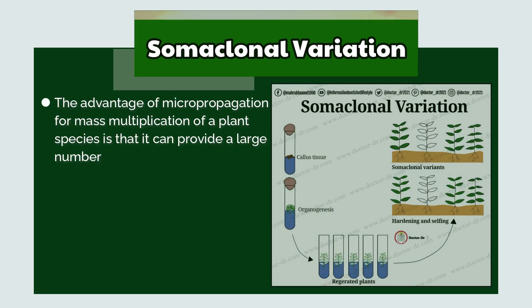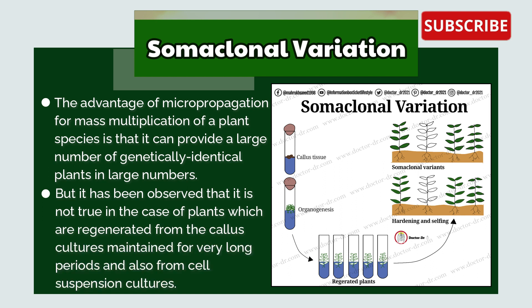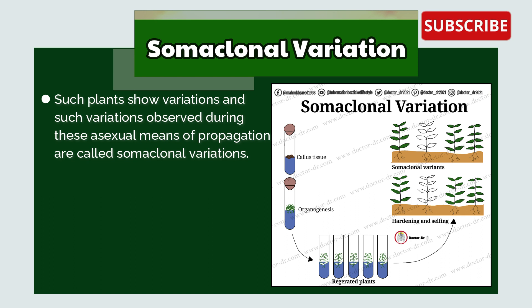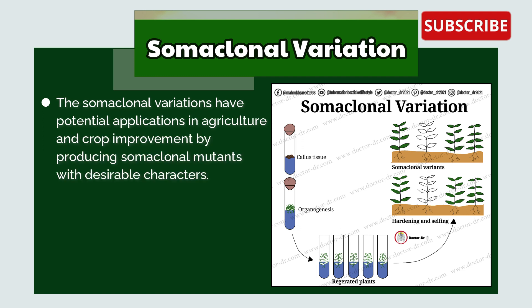Somaclonal variation: The advantage of micropropagation for mass multiplication is that it can provide large numbers of genetically identical plants. However, it has been observed that this is not true for plants regenerated from callus cultures maintained for a very long period, or from cell suspension cultures. Such plants show variations, and these variations observed during asexual means of propagation are called somaclonal variations. The term somaclones was proposed by Larkin and Scowcroft in 1981. Somaclonal variations have potential applications in agriculture and crop improvement by producing somaclonal mutants with desirable characters.